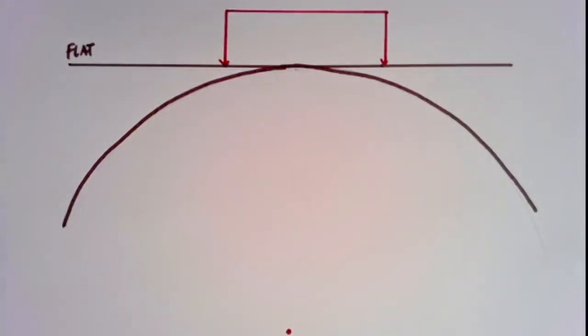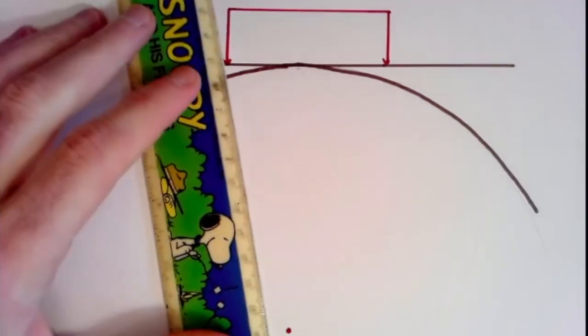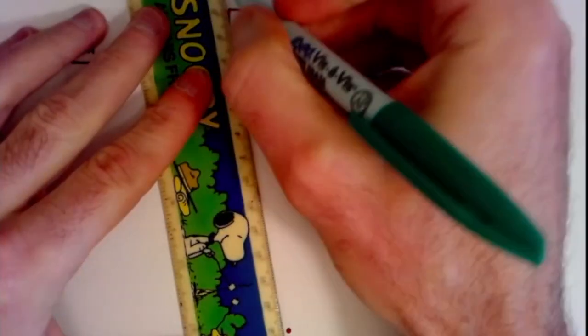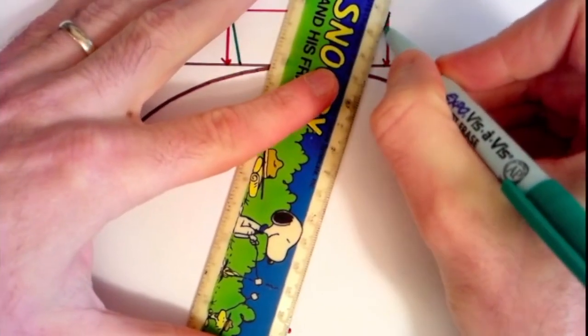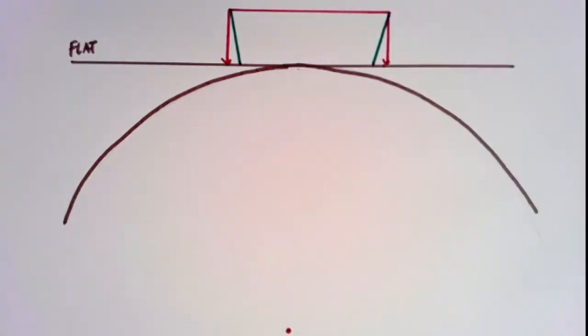If however the earth was round, then the plumb bobs go to the center of the earth and here's what would happen instead. Instead of pointing straight down they would point towards the center of the earth and so the corners of our building should be crooked like this.